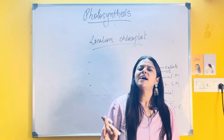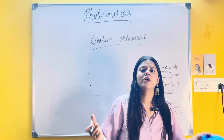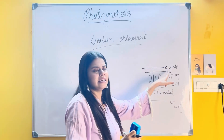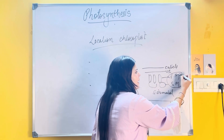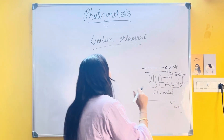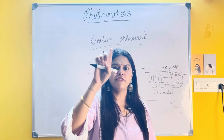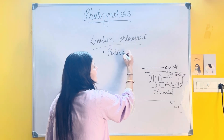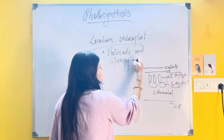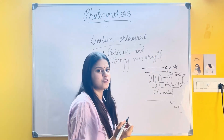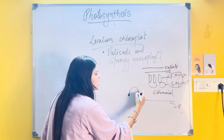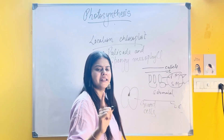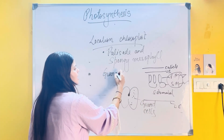In transpiration, you know chloroplast is present in the leaf. So if the question comes — what is the location of chloroplast in plants? — one location is in the leaf. But where exactly in the leaf? In the mesophyll cells: palisade mesophyll and spongy mesophyll cells. Stomata are covered by bean-shaped cells called guard cells. Chloroplast is also present in the guard cells, so the second location is guard cells.